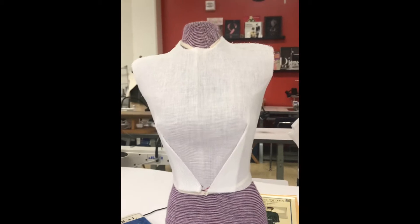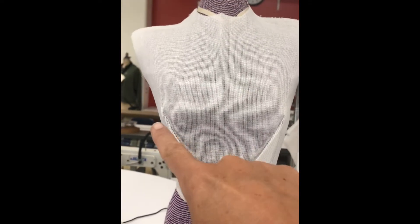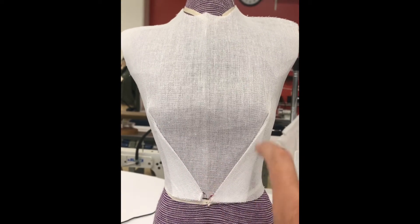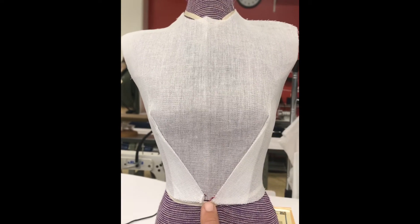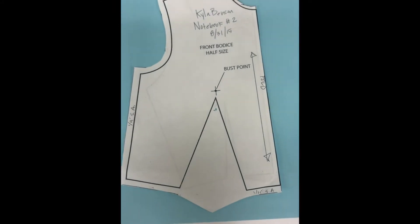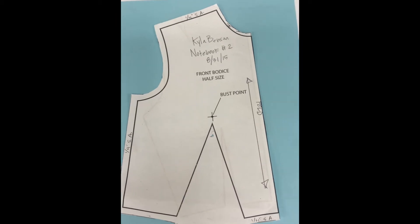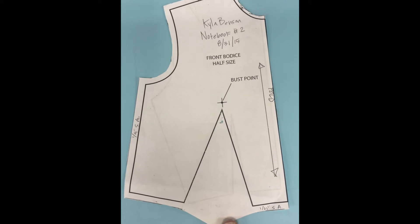My next question is, if your darts are moved so that the darts are actually at a slant and the darts meet at the bottom of your center front, can you then imagine what shape your pattern would look like? The dart definitely wouldn't be here, it would be moved. Can you envision what shape you think your pattern would look like?